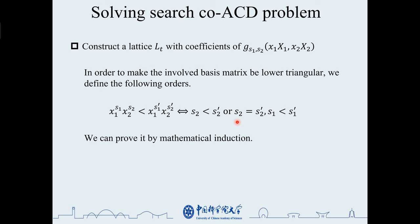Next, construct a lattice LT with coefficients of g(s1, s2). Because the construction of the lattice basis matrix is related to all monomials x1^s1 x2^s2, we define an order to make the matrix be lower triangular.